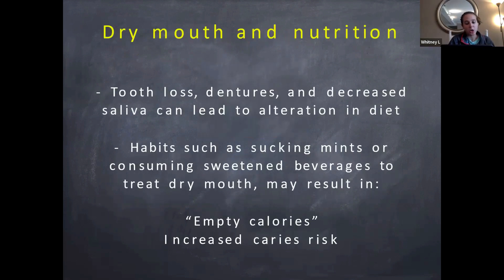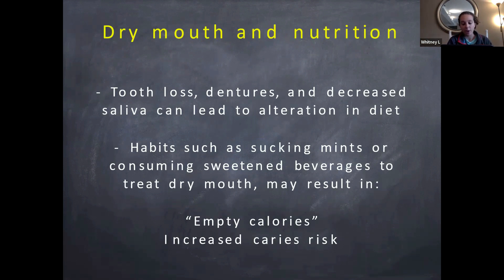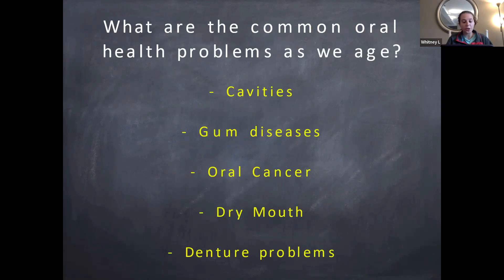Dry mouth and nutrition are another strong connection — tooth loss, dentures, and decreased saliva can lead to alterations in diet. Habits like sucking mints or consuming sweetened beverages to treat dry mouth may result in increased cavity risk. Common oral health problems as we age include cavities, gum disease, oral cancer, dry mouth, and denture problems.